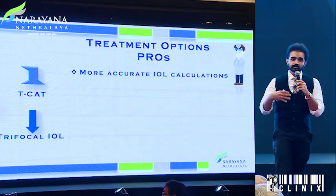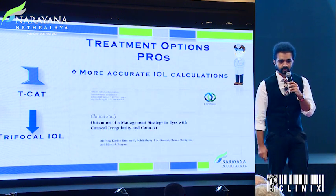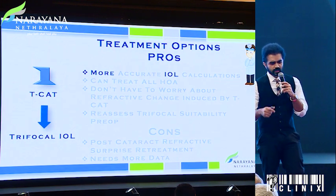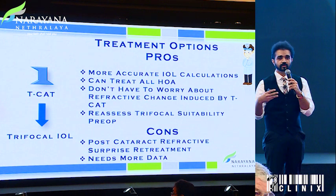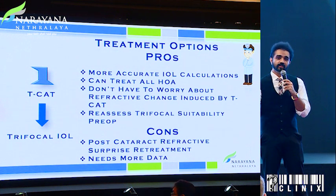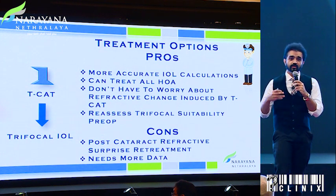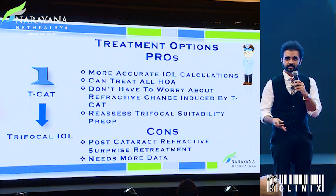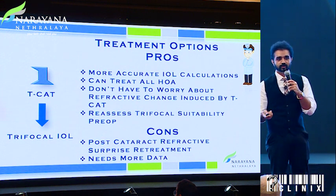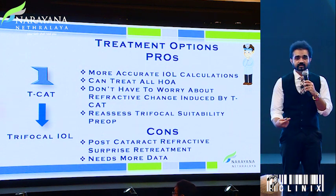For option one — treatment first, then IOL surgery — we'll have much more accurate IOL calculations. We did a study where we found almost 1.3 diopters difference pre and post-surgery in terms of IOL planning. Another benefit is the advantage of doing cataract surgery following regularization, so we can treat all the higher-order aberrations and we're not too worried about refractive change post-treatment. You can also reassess whether the patient is a suitable candidate for a trifocal IOL. The con is if you get a post-refractive surprise and don't have much residual tissue for another treatment, you're in trouble, and it definitely needs more data.